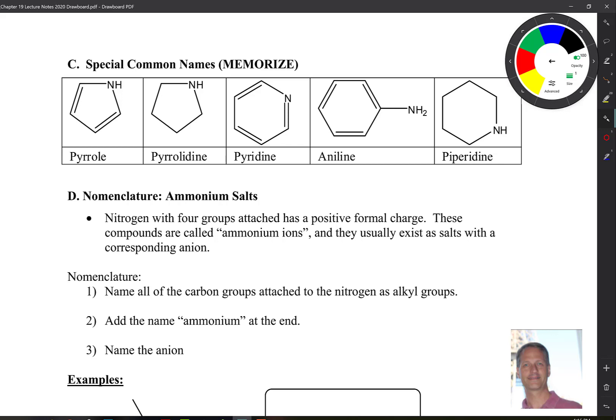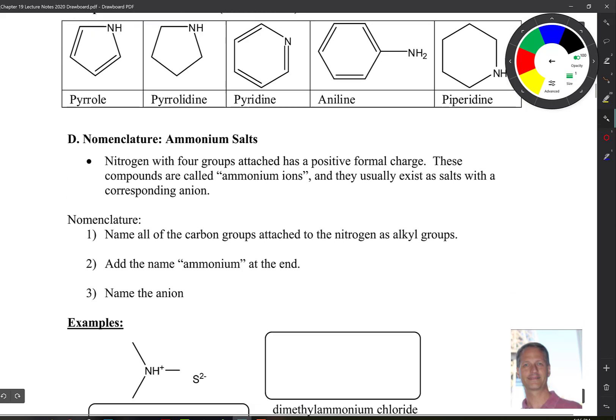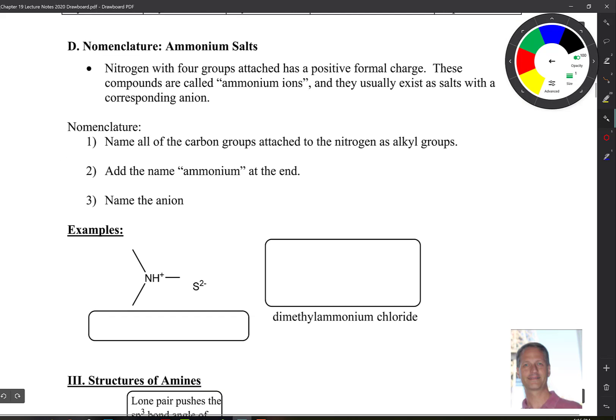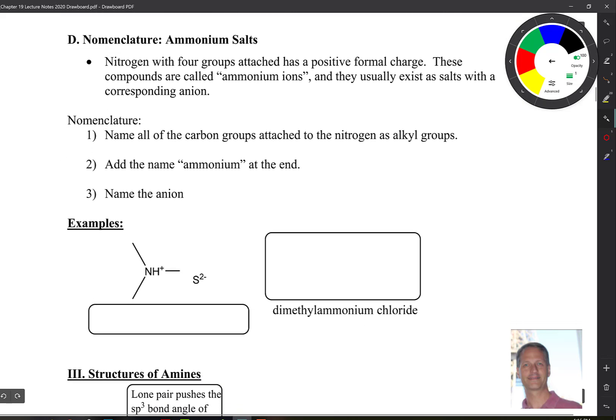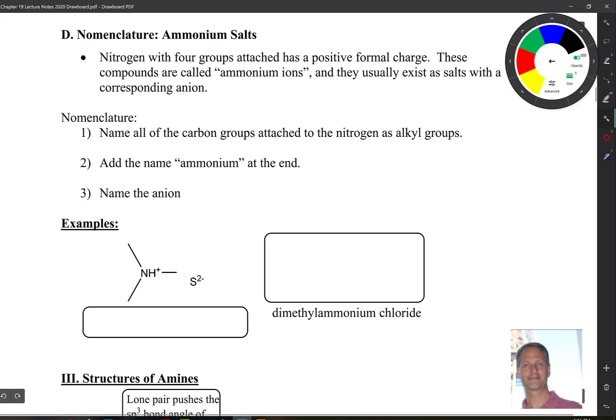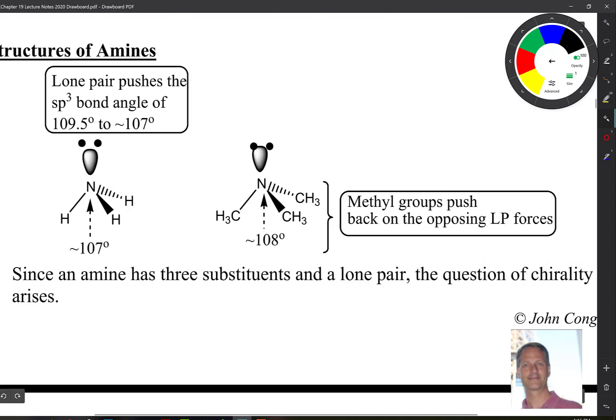Now naming the salts is actually based on G-Chem rules. So NH3 is ammonia, NH4 is ammonium. So salts, that is compounds that have charges, will be named as ammonium salts. We name all the carbon groups attached to the nitrogen as alkyl groups. And then we simply add the name ammonium to the end, and then we name the anion.